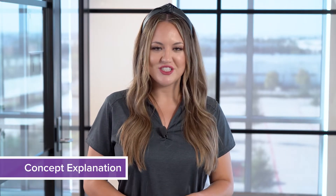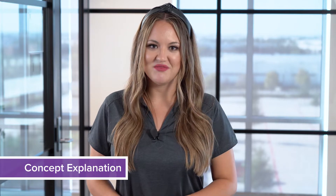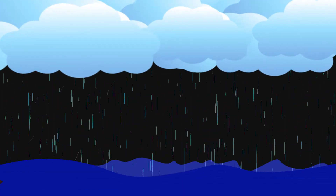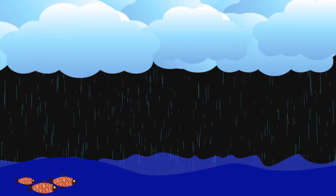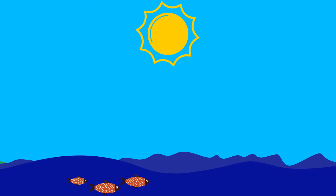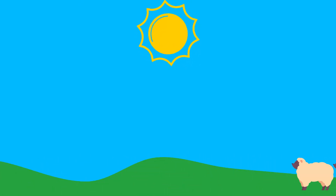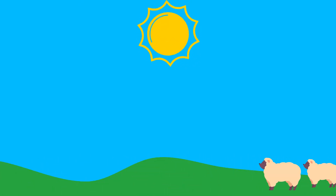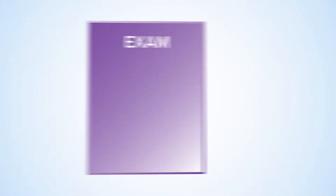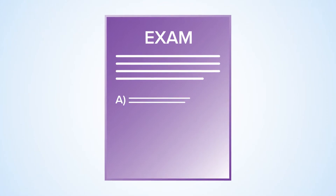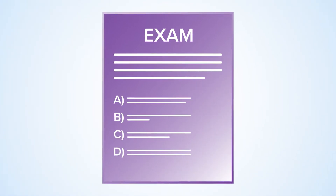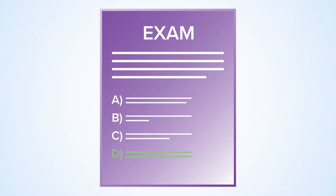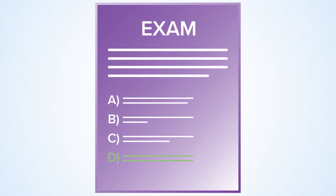The first science practice that you'll master is concept explanation. This is the typical practice that you would expect to learn in class. You'll develop an understanding and be able to explain environmental processes that shape our world. On the exam, these are traditional multiple choice questions where you'll either be presented with a concept or a description of that concept.